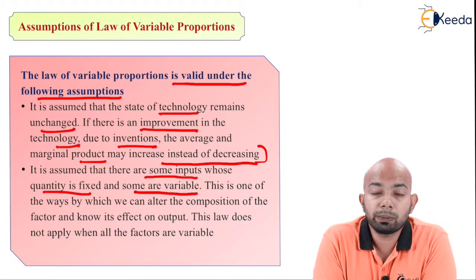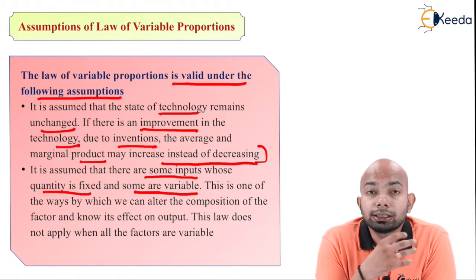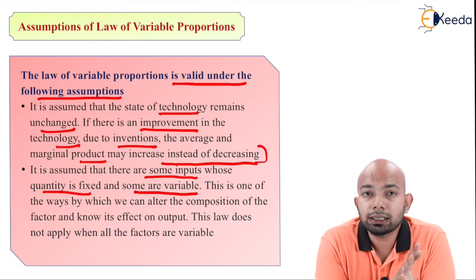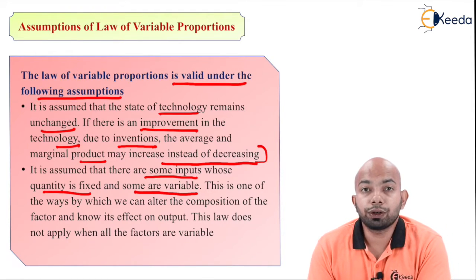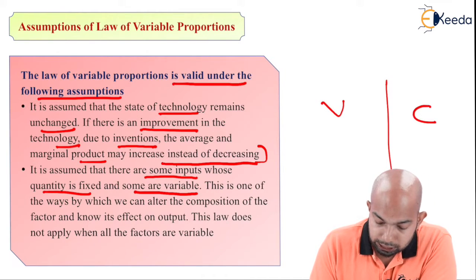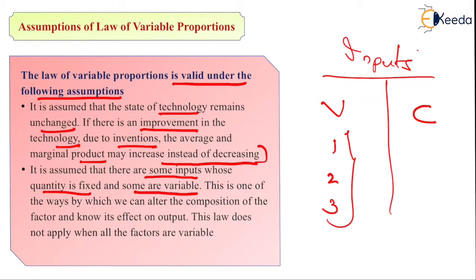It is also assumed that some input factors are fixed and some are variable. We assume that certain input factors will remain constant no matter what, while other factors remain variable. If we denote V for variable and C for constant, there will be certain input factors — say factors 1, 2, and 3 — that constantly keep changing, and other factors — 4, 5, and 6 — that always remain in the constant group.